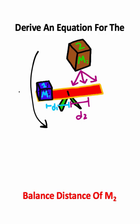I need to recognize that there will be a torque caused by mass one. There will also be a torque caused by mass two, and in order for there to be balance, torque one has to equal torque two.